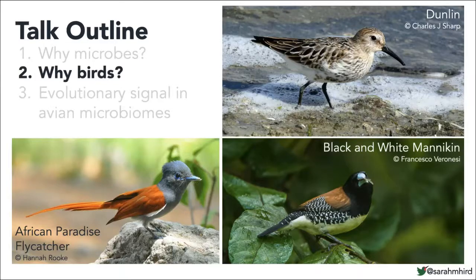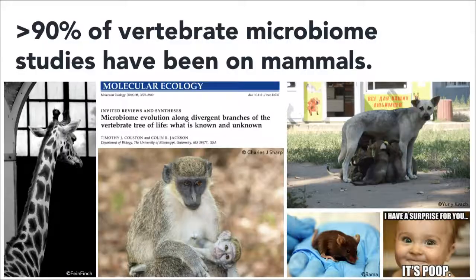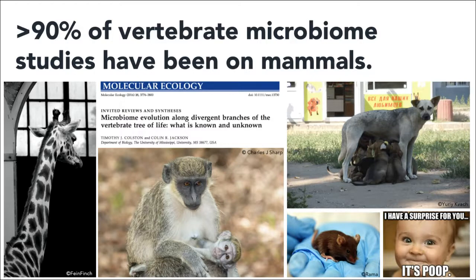Moving on to a short introduction of why birds. A lot of interest in microbiomes stems from our desire to live long, healthy lives, and that's why most vertebrate microbiome literature is on mammals, including charismatic species in zoos, primates, companion animals, and model organisms like mice and rats. A lot of research has been on humans and specifically the human fecal microbiome. We've learned a lot from these studies, but not everything may translate to other classes of organisms because two important features of mammals strongly shape their microbiomes: live birth through a vaginal canal that may be densely populated with bacteria, and an early exclusive diet of milk, which can seed and structure the baby's microbiome very heavily.